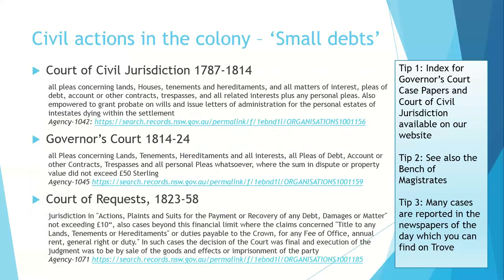There were courts that handled small debts. These morphed over time with slightly changing names, but their role was basically the same. The Court of Civil Jurisdiction runs until 1814 and involved land, houses, tenements, hereditaments, pleas of debts, contracts, and it also had probate on wills. The Governor's Court is 1814 to 1824 and handles most of the same things, though not probates. The Court of Requests takes over from 1823 to 1858, handling debts where the matter doesn't exceed £10. Many of these court cases are also reported in the newspapers, which are now available digitally on Trove.